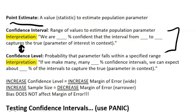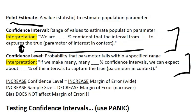The interpretation of a confidence interval is your conclusion, and it needs to be stated in context. You're going to say: 'We are blank percent confident that the interval from blank to blank captures the true parameter of interest' — in context. A lot of times the FRQ will have a follow-up question asking you to interpret the confidence level as well, so have that down too.